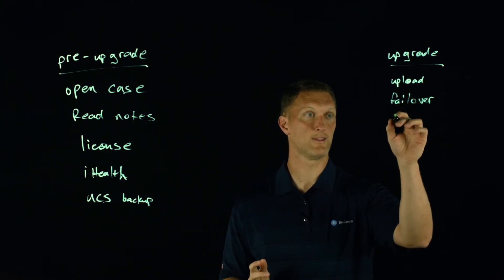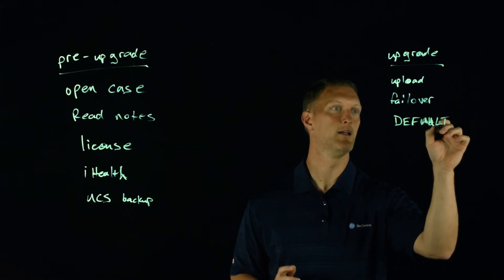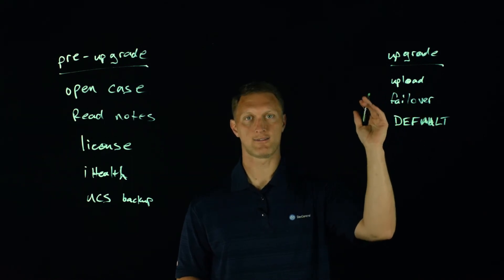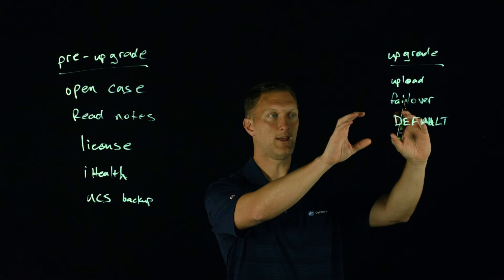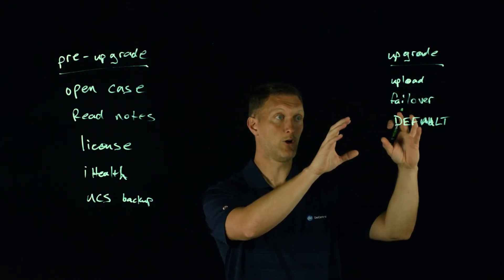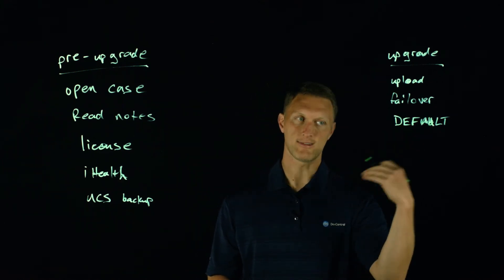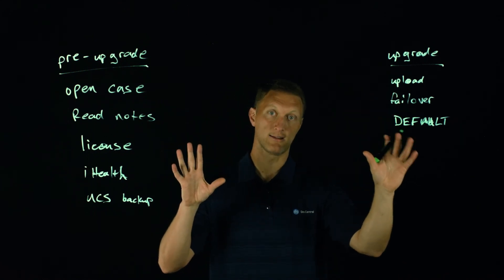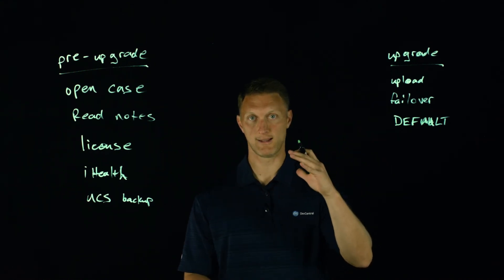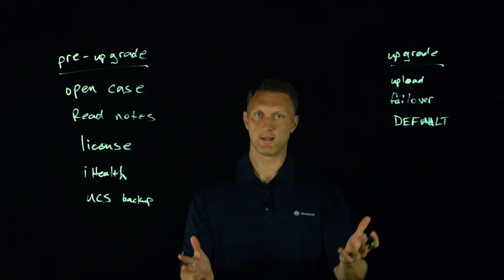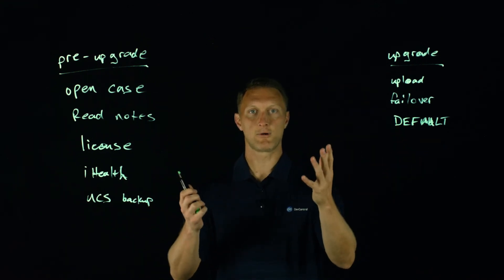A couple of additional things to keep in mind: defaults can change between versions. For example, your default cipher list on an SSL profile, local traffic policies — any default setting you have in place needs to be reviewed, because defaults change as versions change. Also check iRules and other functionality. There's a user on Dev Central, JTI, who posted a seven-part upgrade checklist available on Code Share — we'll link to it. It's a great checklist to go through to make sure everything is working properly after your upgrade.